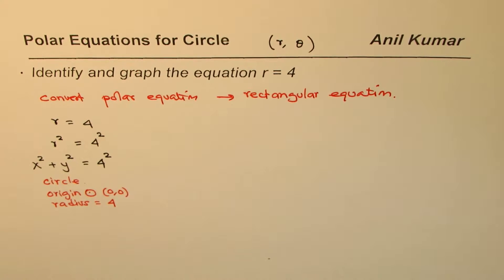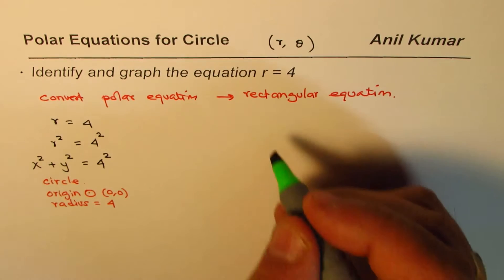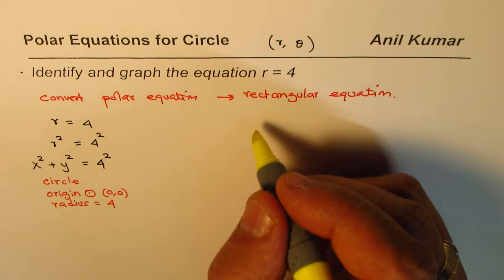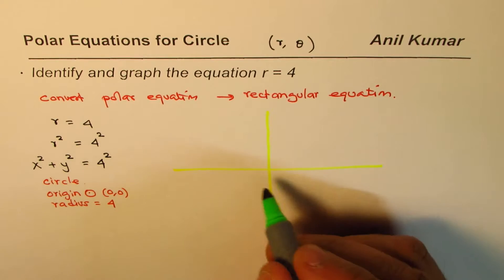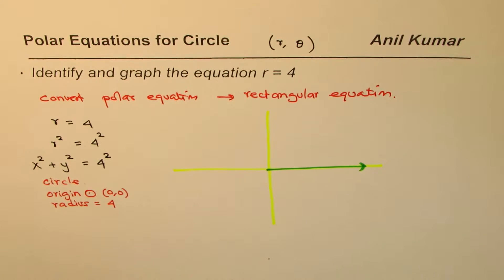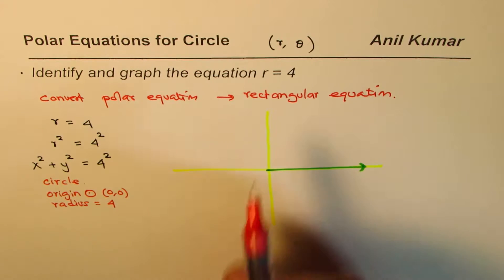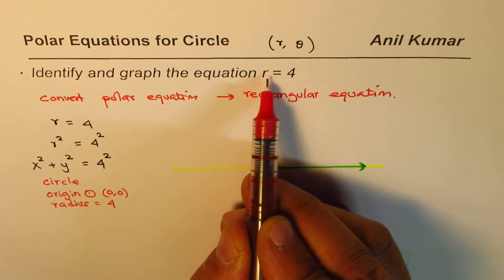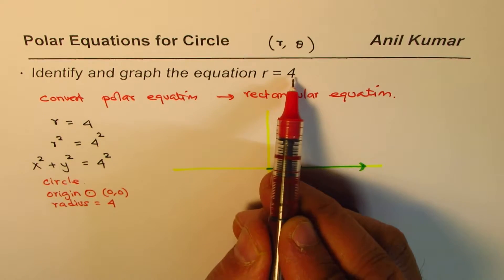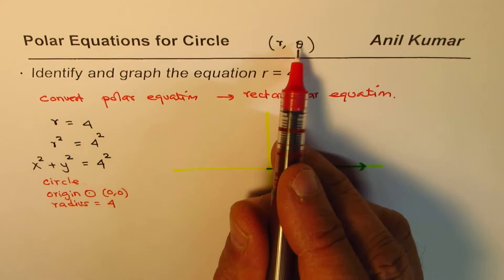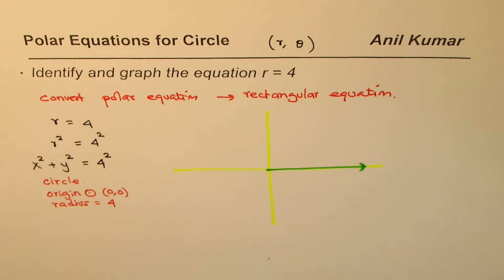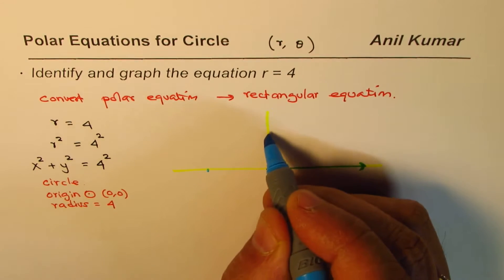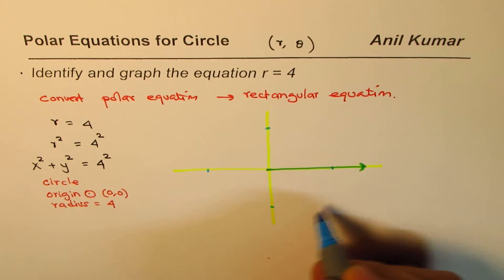With that information we can sketch the graph. On a polar system we have the polar axis going from the pole toward the right side. r equals 4 means all the points, irrespective of theta — theta could be anything — that are four units away from the pole.